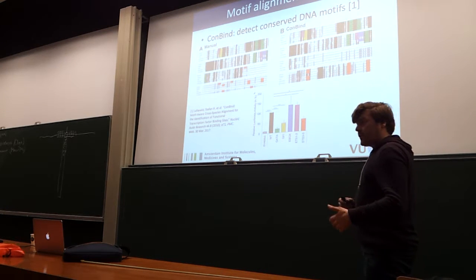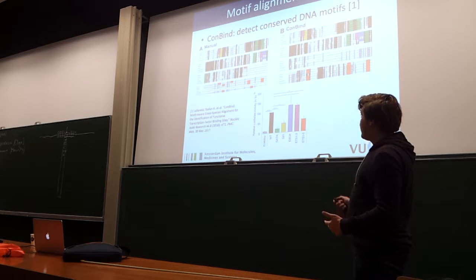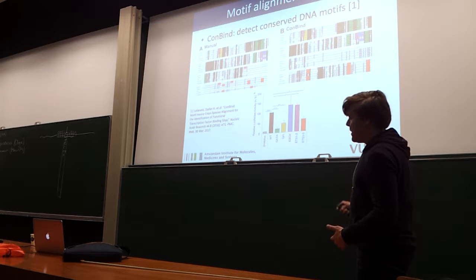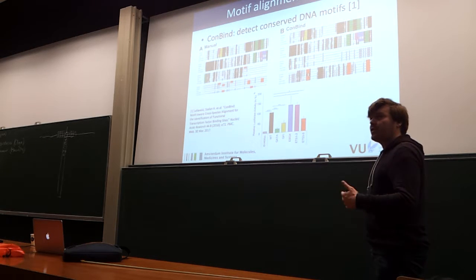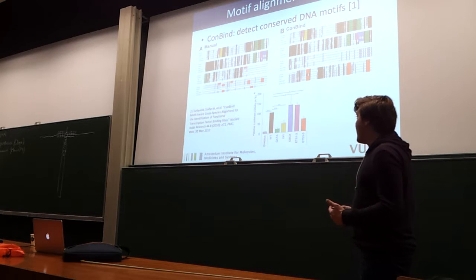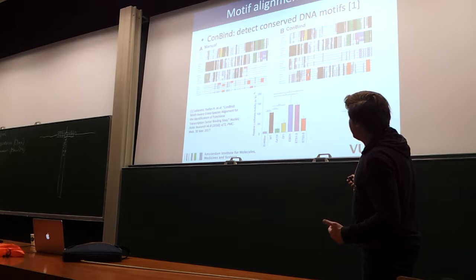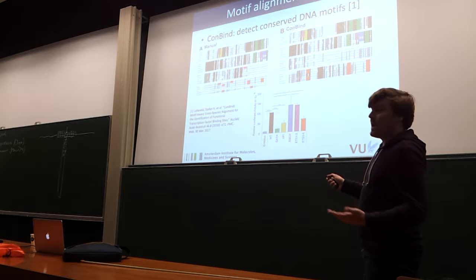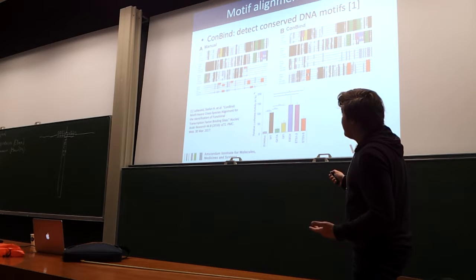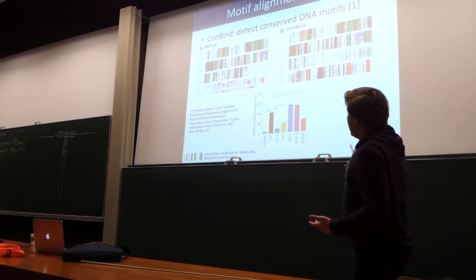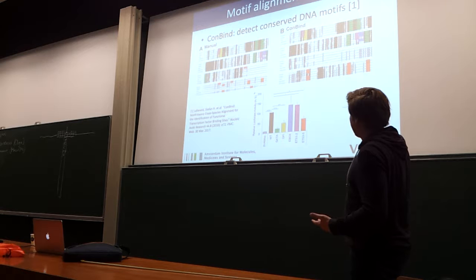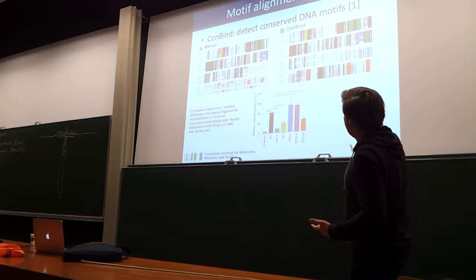We first applied this principle to DNA alignments. This was published in 2015, where we tried to measure the conservation of enhancer sites on the DNA. This was called Combine. What you can see here is the normal alignment with a standard sequence alignment program. It doesn't do that badly for some motifs, but it does very poorly for the red motifs. Then you have our method, and you can see it does much better — it doesn't give a perfect result, but the red motifs that were completely scattered before are now nicely aligned.